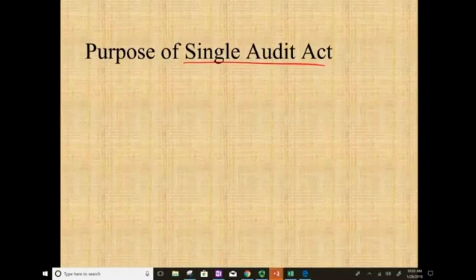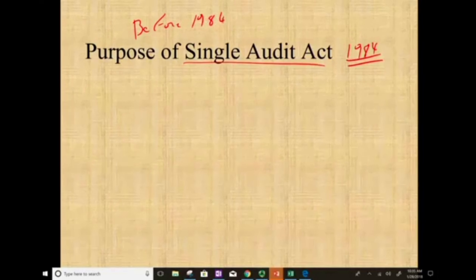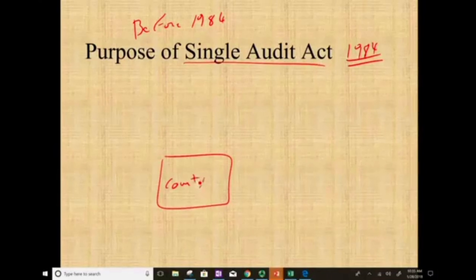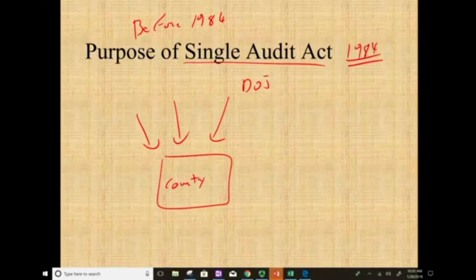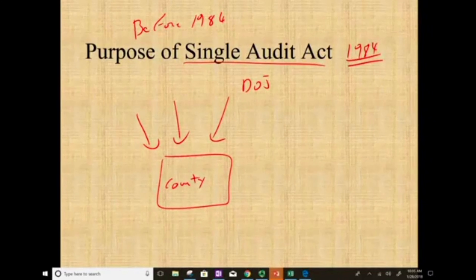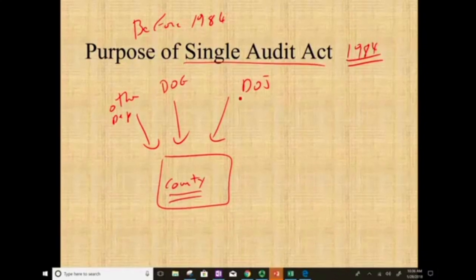The Single Audit Act — what's the purpose of it? This is the Act of 1984, so it started in 1984. Before 1984, a county or a state would receive federal funding from various agencies — for example, the county would receive funding from the Department of Justice, the Department of Education, and other departments. So the local county received money from three different federal agencies.